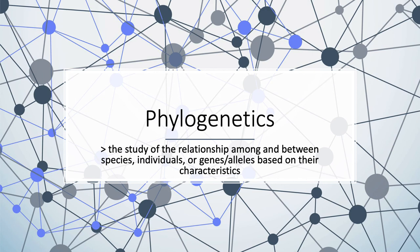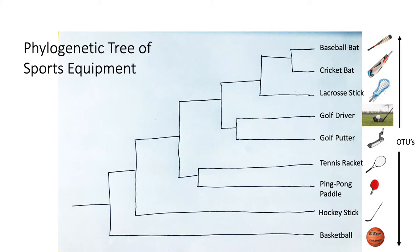Today we will be discussing a phylogenetic tree of sports equipment. Remember, phylogenetics is the study of the relationships among and between species, individuals, or genes/alleles based on their characteristics.